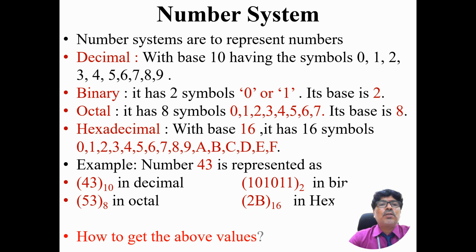In hexadecimal, A represents the value 10, B is 11, C is 12, D is 13, E is 14, and F is 15. So in binary there are 2 symbols, in octal 8 symbols, and in hexadecimal 16 symbols. Using these symbols, we can represent any number in that base.